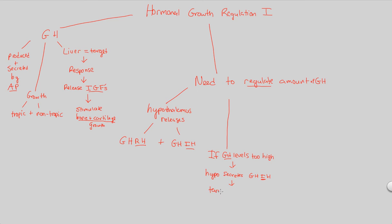So upon secreting that, we're going to have a target. The target would be the anterior pituitary, because the anterior pituitary is directly connected to the hypothalamus via that portal vein. So the anterior pituitary gets the message.